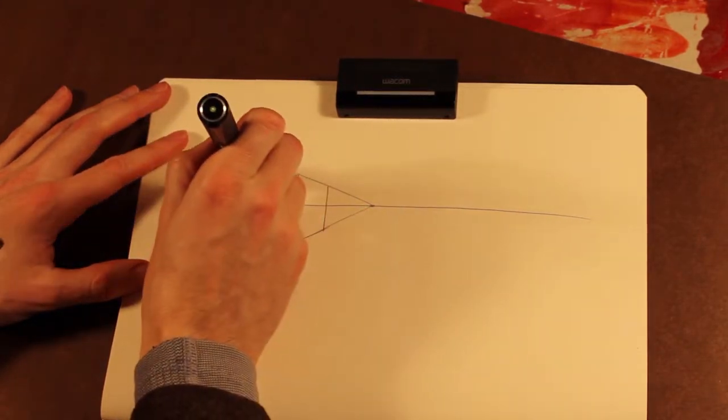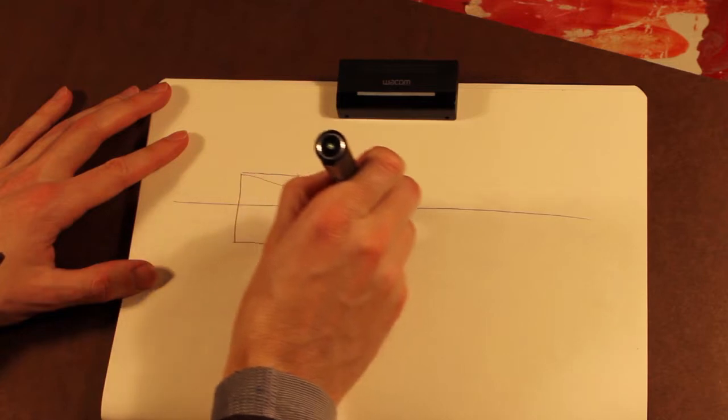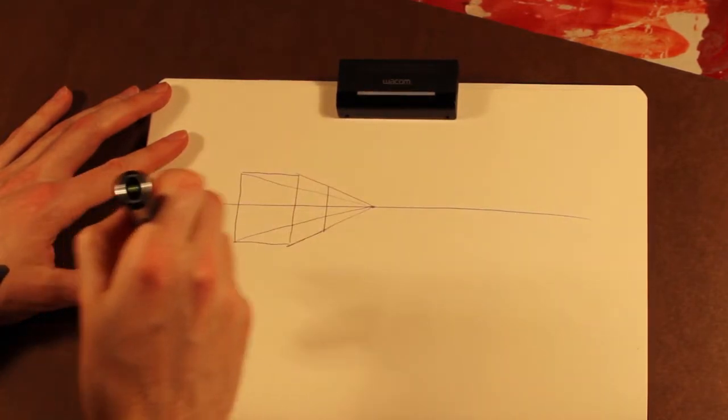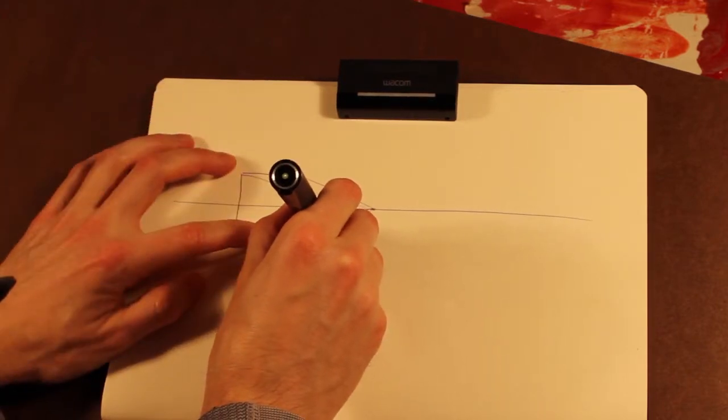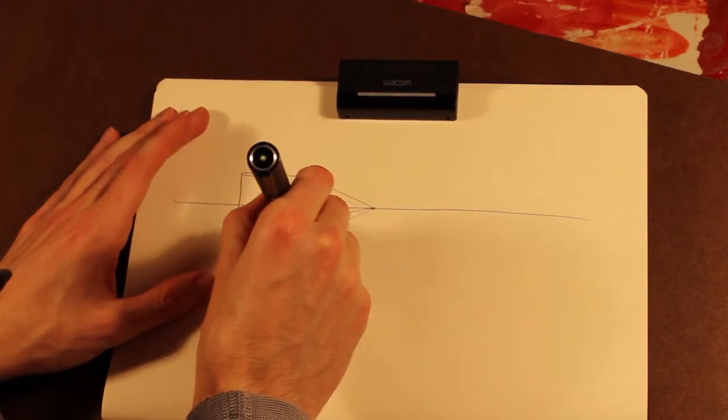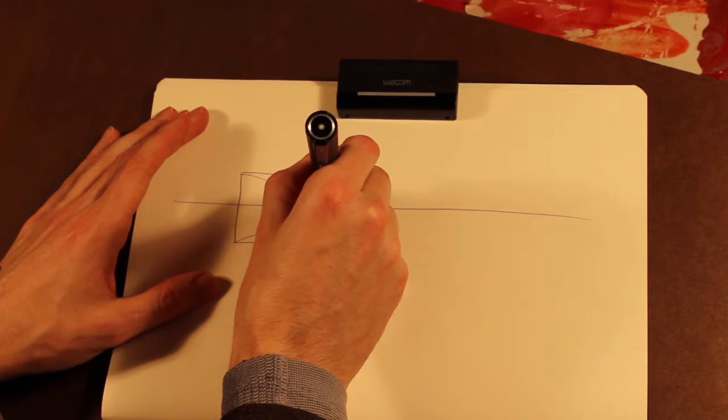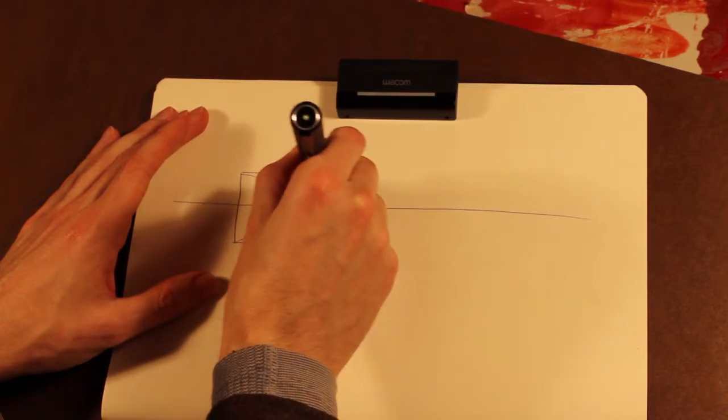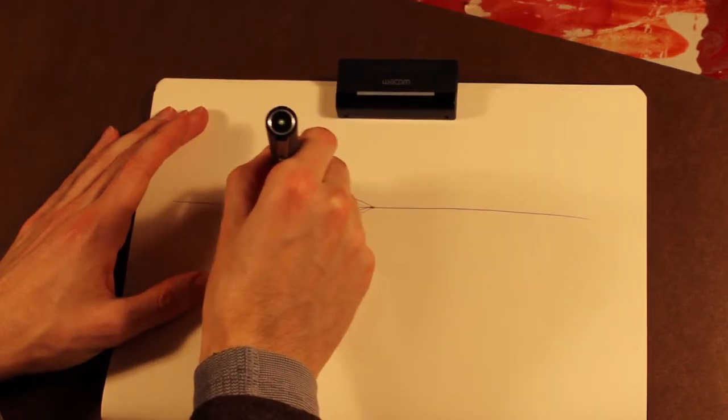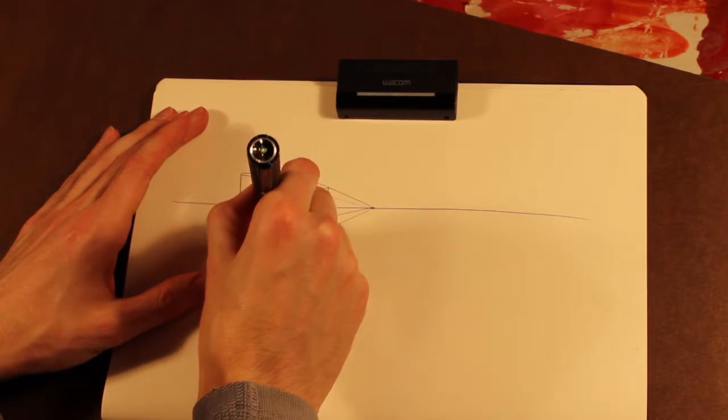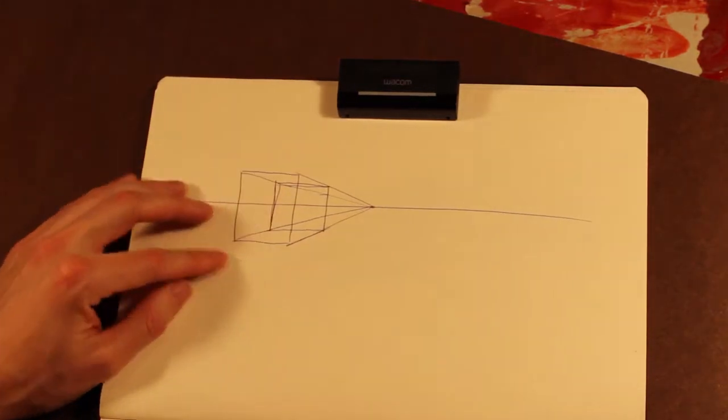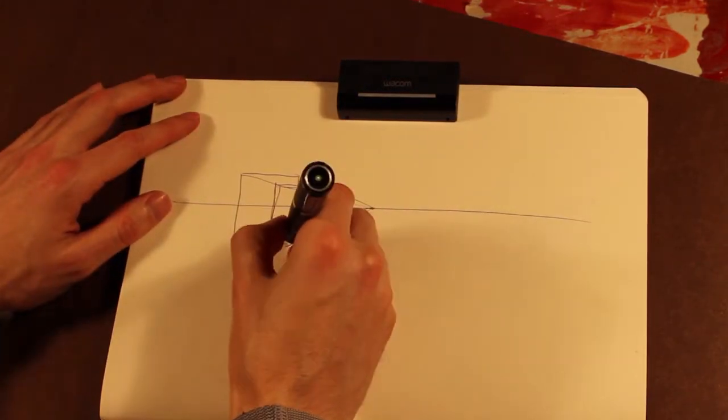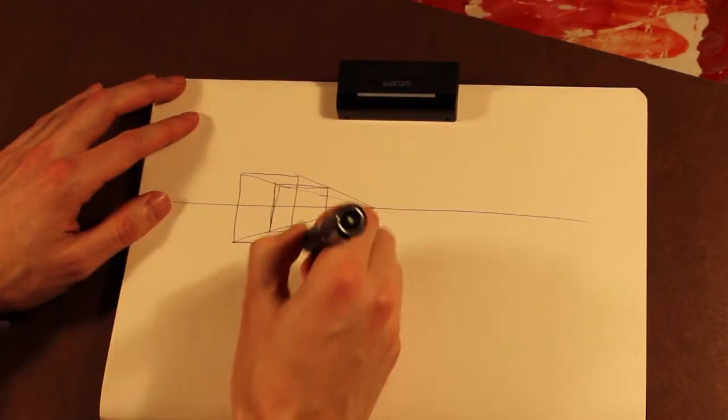If you're going to draw through the form, you're going to drop back to the vanishing point. Then to find where the verticals are, you're going to drop your parallels to the horizon. Since I'm not using a ruler, I'm just going to split the difference, and there it is. So here we've got a basic rectangular solid.